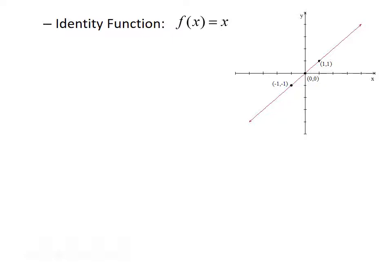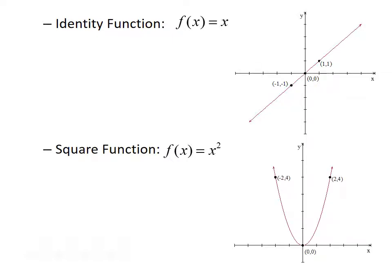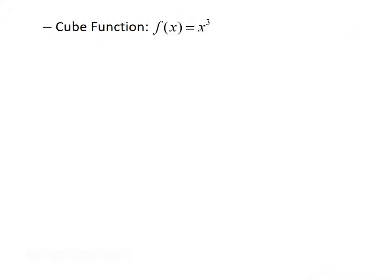For every point on the identity function graph, the x-coordinate is the same as the y-coordinate. The next function is the square function, f of x equals x-squared, and its graph is a parabola that opens upward with a vertex at the origin. Next, we have the cube function, f of x equals x-cubed, and it's kind of s-shaped, going from the third quadrant into the first quadrant.